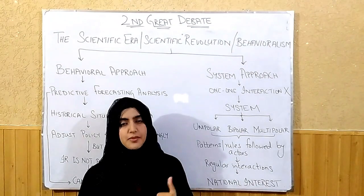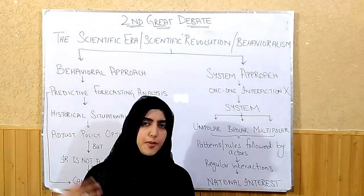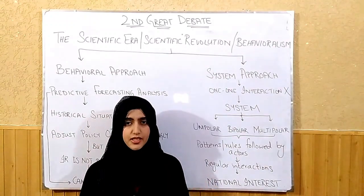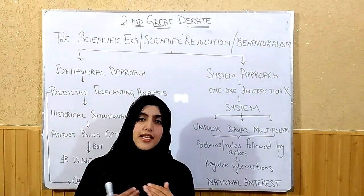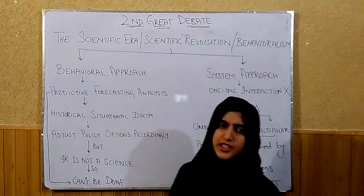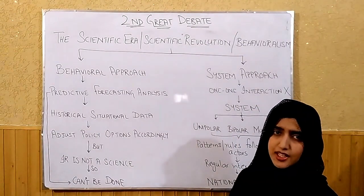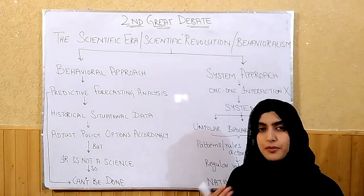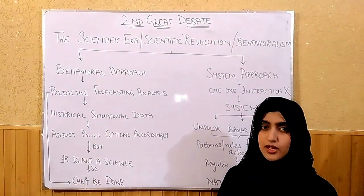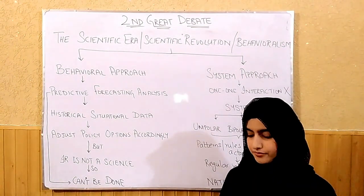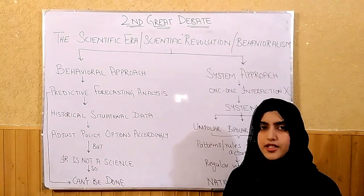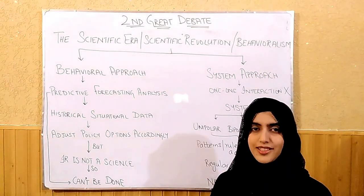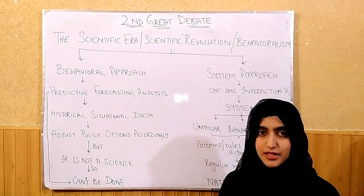So let's summarize: the behavioural approach is about prediction using data, and the system approach is about what kind of system is operating among states. We should know the concepts and theories we are talking about — whether we apply them in the paper or not. We generally do not apply these approaches directly in the paper. And this was the second-grade debate — it has now been completed. The whole portion of theories and approaches has been completed.